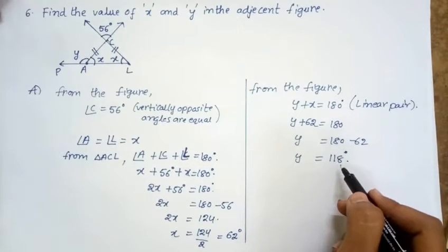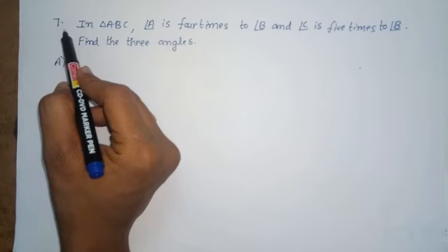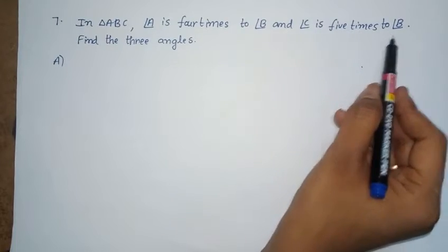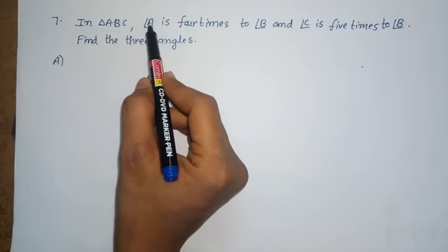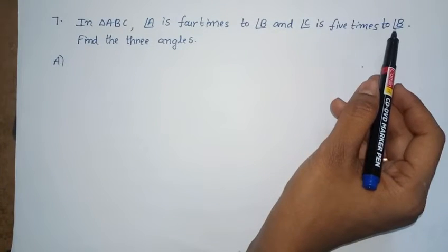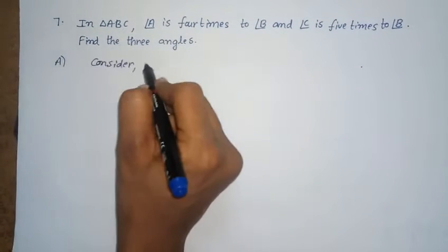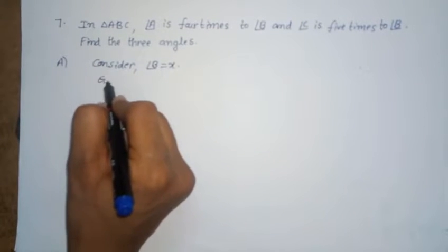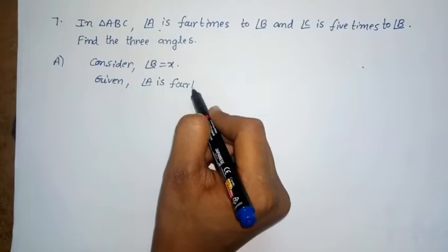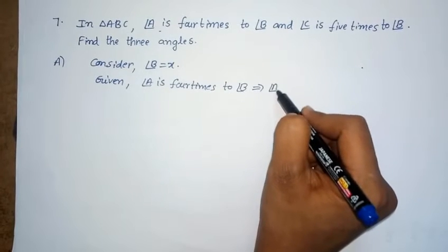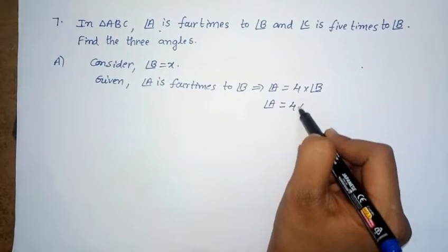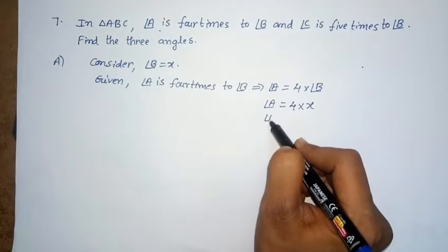So Y equals 118 degrees. This is the solution for the 6th problem. Next problem, seventh: in triangle ABC, angle A is 4 times angle B and angle C is 5 times angle B. Find the 3 angles. Since angle A and C are compared to angle B, first consider angle B equal to X. Angle A equals 4 times angle B, so angle A equals 4X.